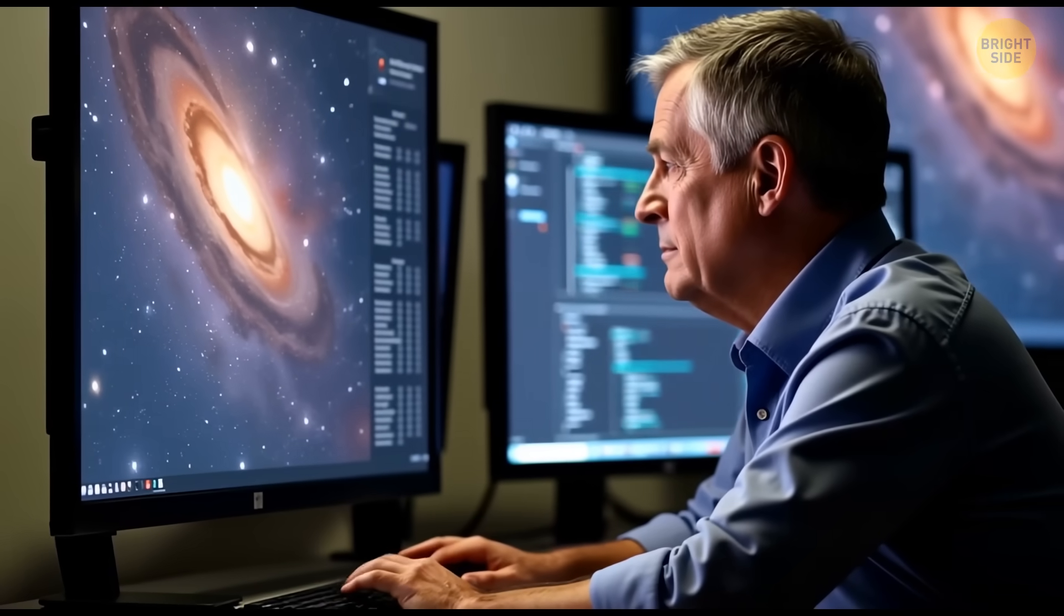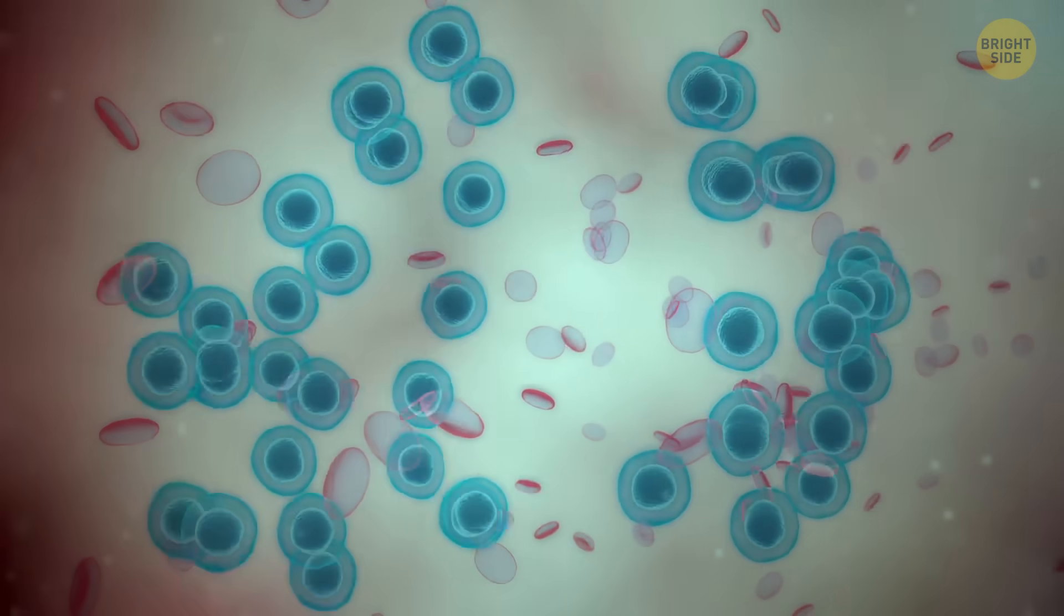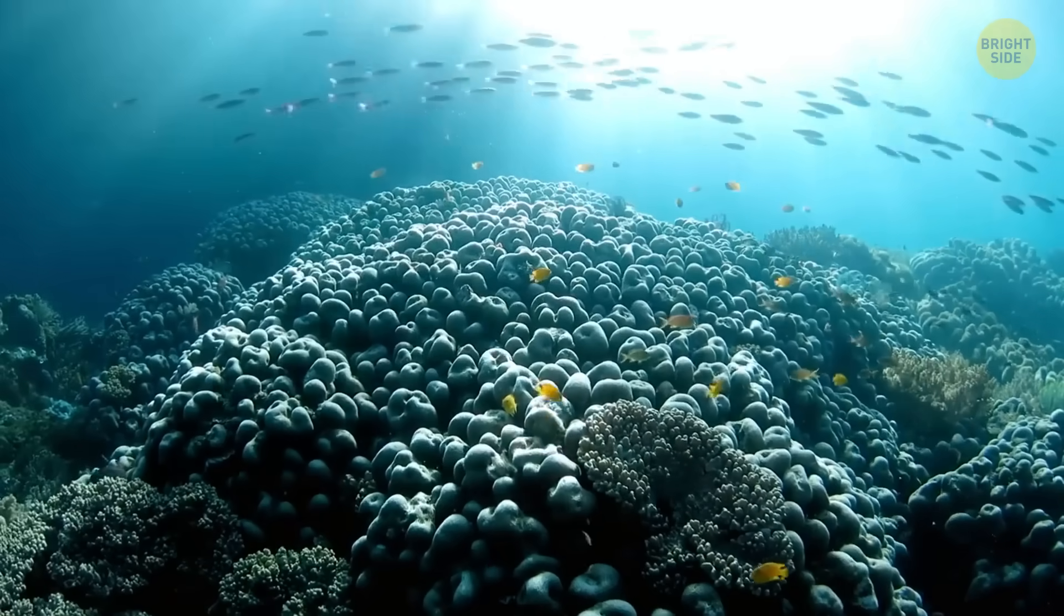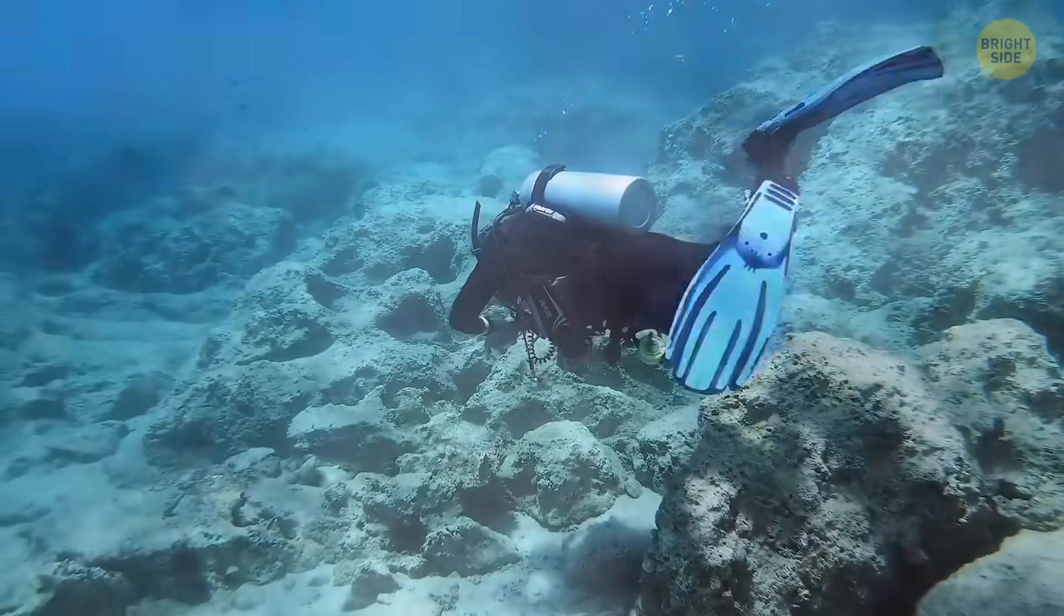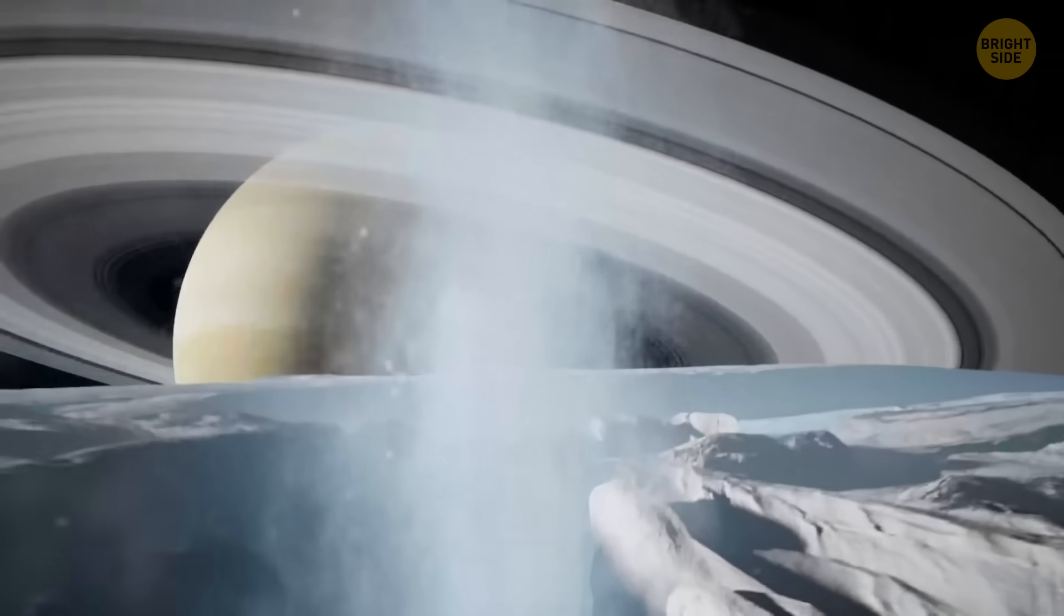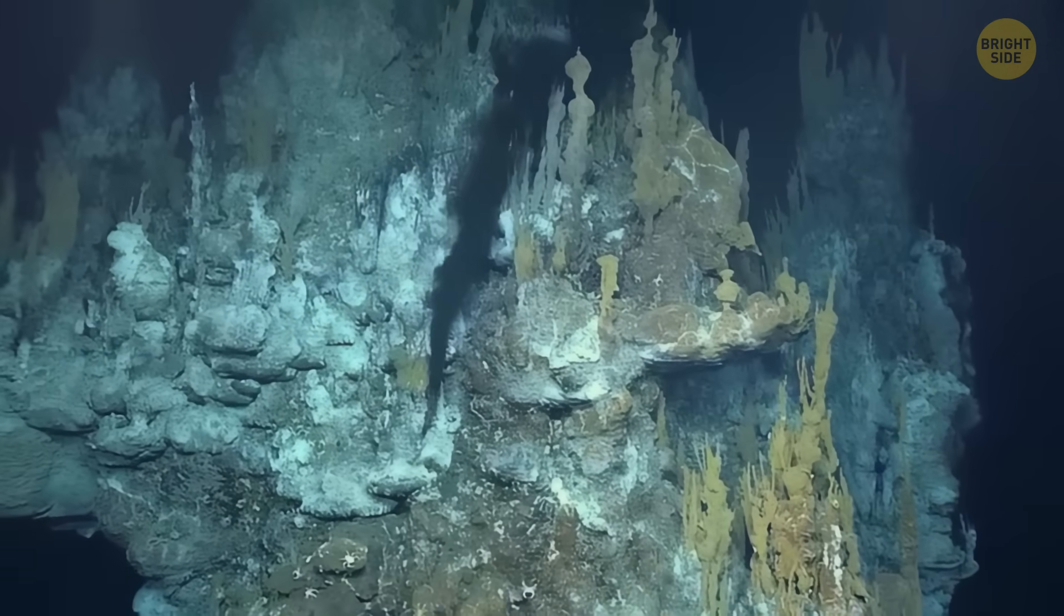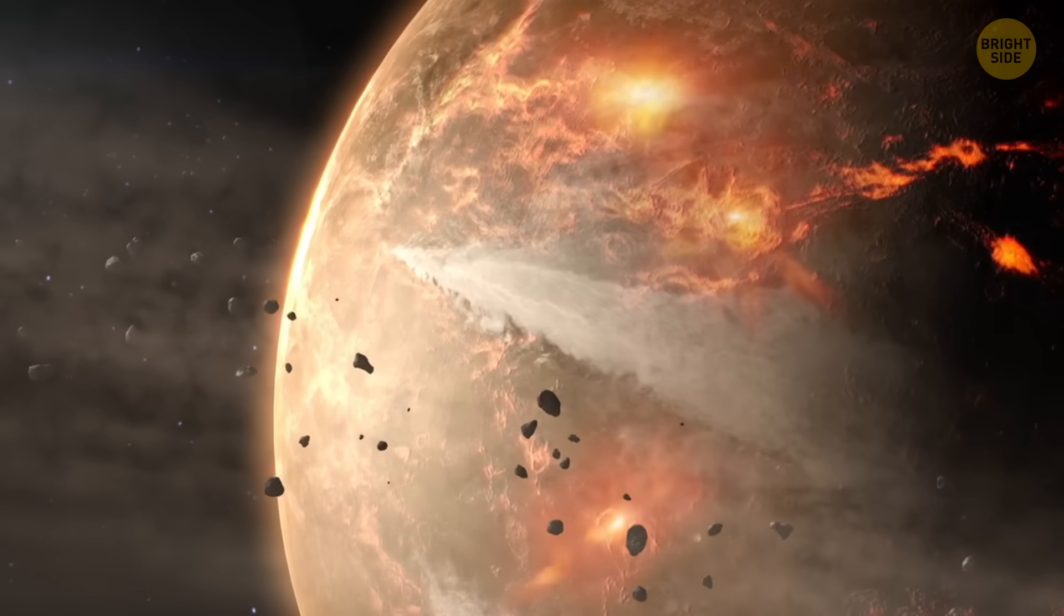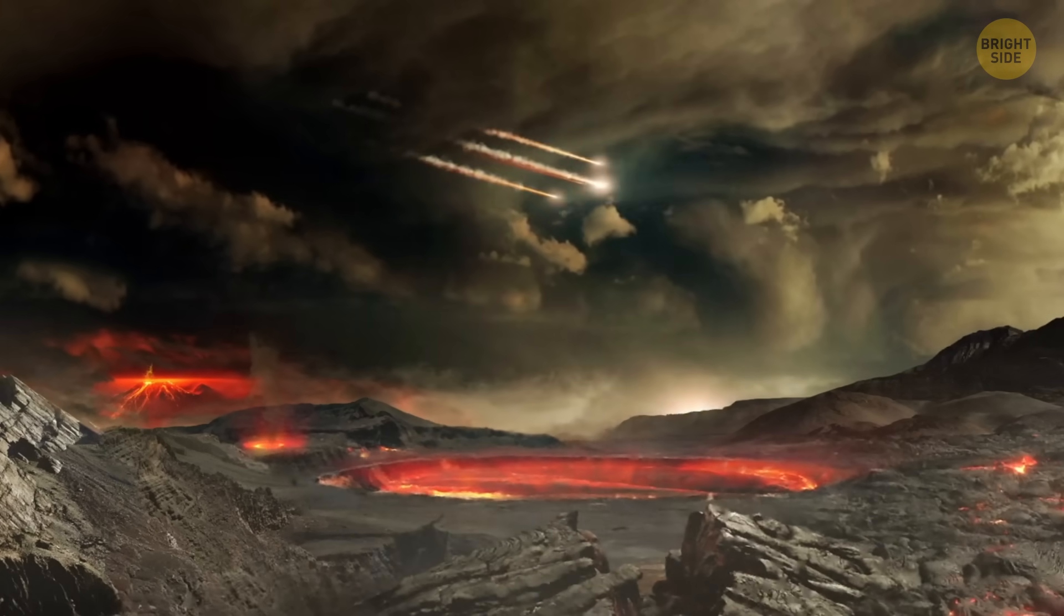Every time humans find liquid water somewhere new, we're basically discovering another version of the one thing that made us possible. Earth's oceans gave birth to everything alive, including us humans. When scientists learn how Europa's or Enceladus's oceans stay liquid without sunlight, they learn something about Earth's deep-sea vents, about heat and balance. When they model Titan's chemistry, they're basically looking at what Earth might have been like before life began.